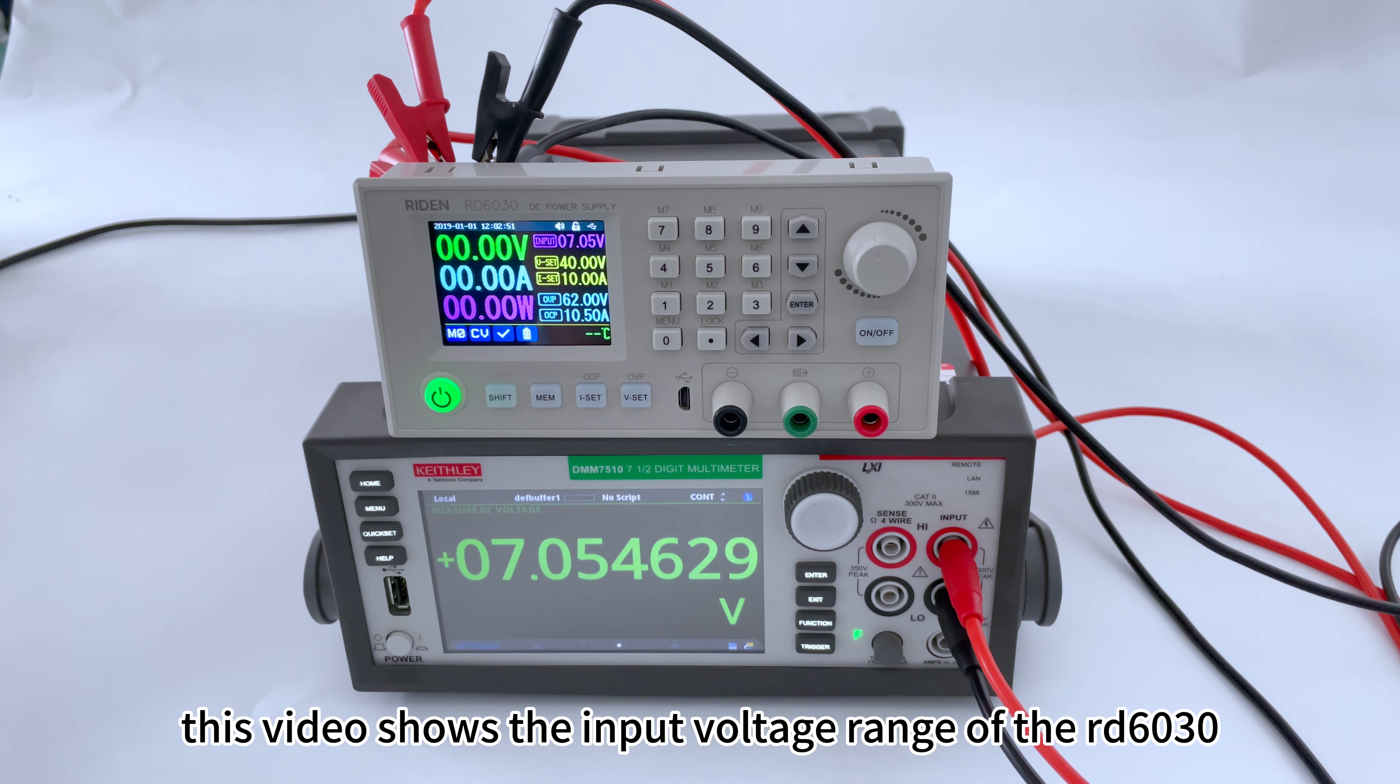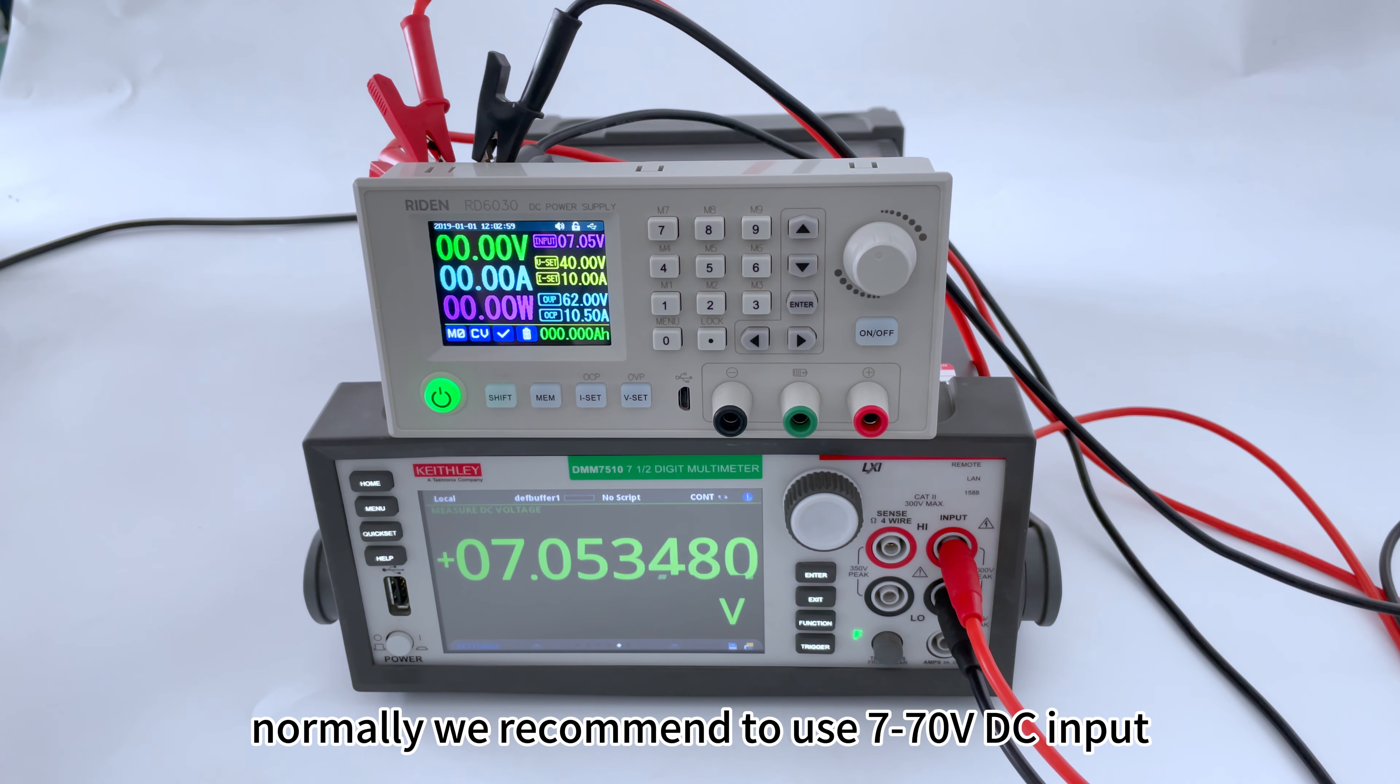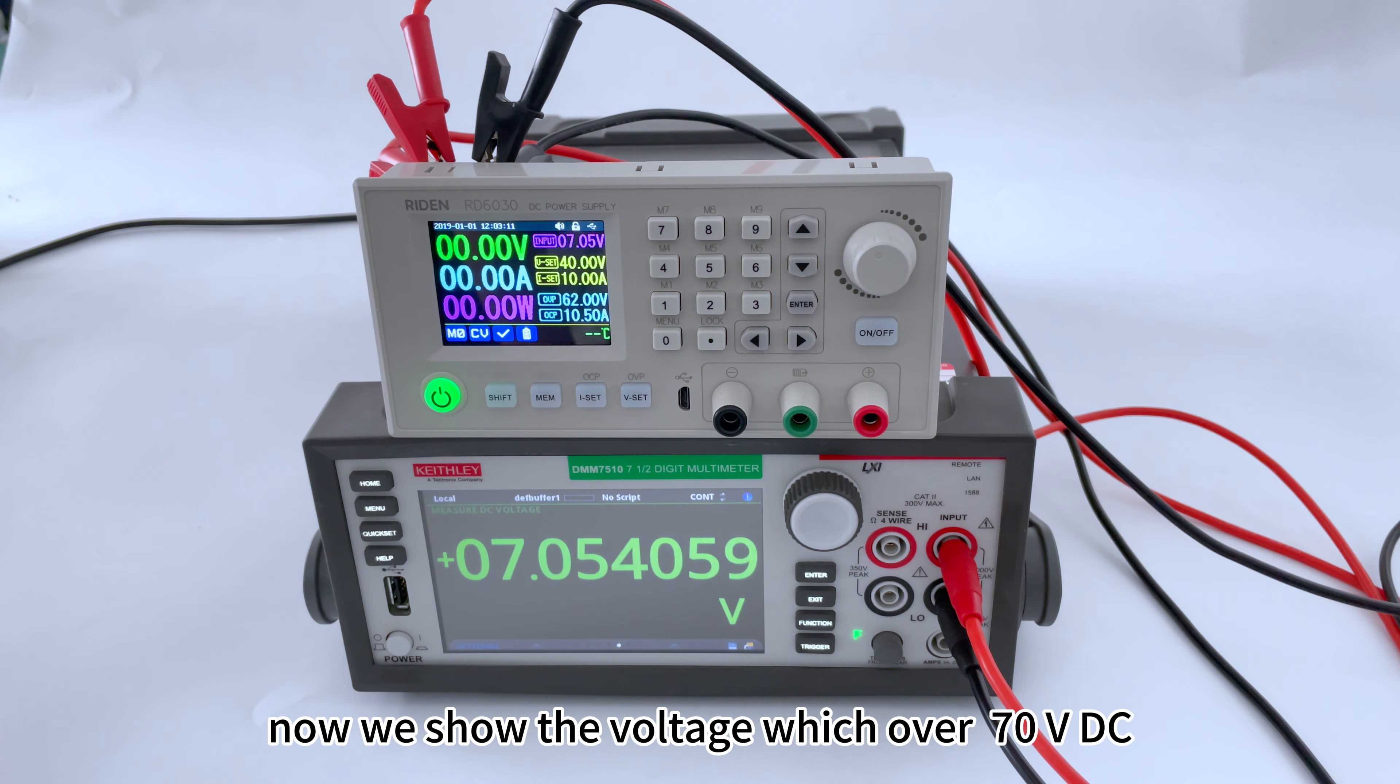This video shows the input voltage range of the RD6030. Normally we recommend using 7 to 70 volt DC input, and now we'll show what happens when the voltage is over 70 volts.